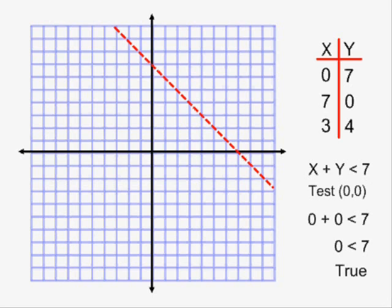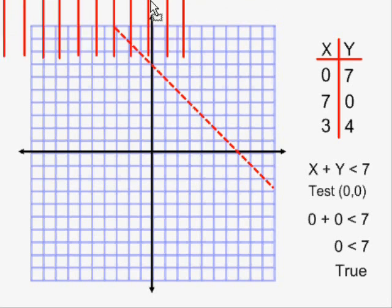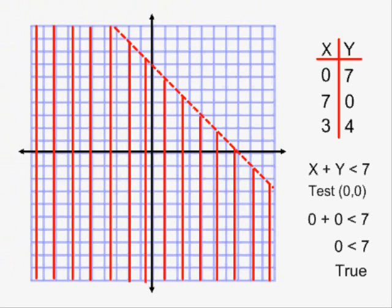If I replace both x and y with 0s, I end up with the statement 0 less than 7, which is true. Since true means towards, I shade from my line towards my test point, and that means I am shading this region. This is how you shade an inequality.